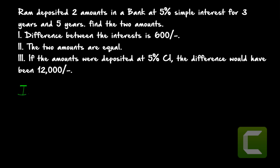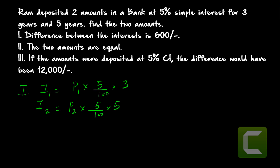Interest one: I1 = P1 × 5/100 × 3. Interest two: I2 = P2 × 5/100 × 5. Statement one gives I2 − I1 = 600, which simplifies to (5/100)(5P2 − 3P1) = 600. Since there are two unknown variables P1 and P2, statement one alone is not sufficient to solve the problem.